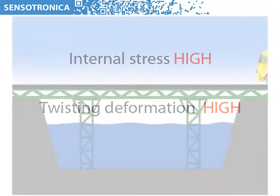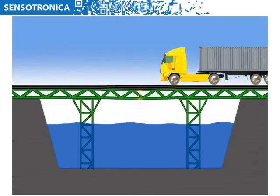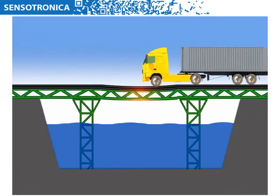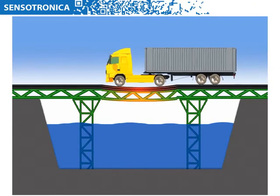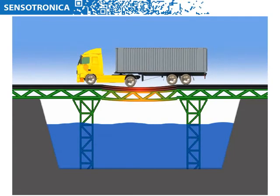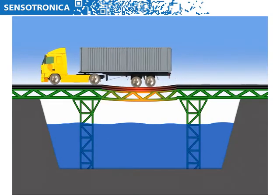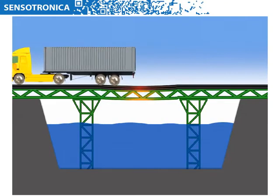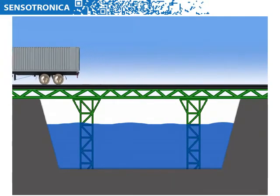One of the other common reasons for bridge bending is overloading by heavy traffic. In this case, fatigue builds up on the construction parts and, as a result, micro-cracks appear. This affects the bridge's reliability and performance of structural components, and the bridge wears out faster than it's supposed to.